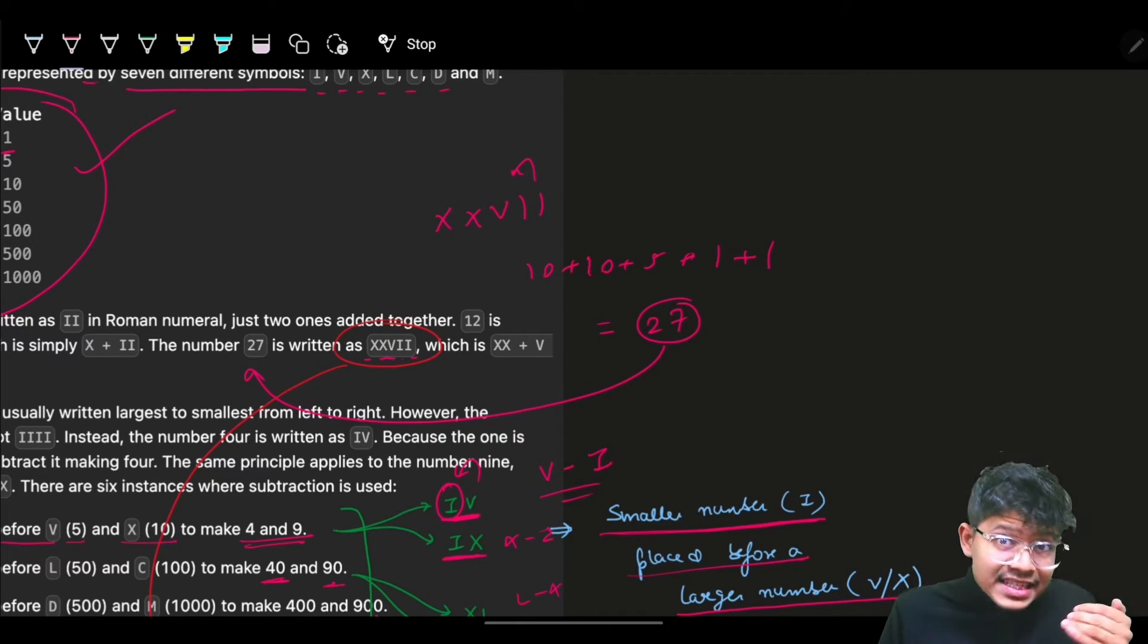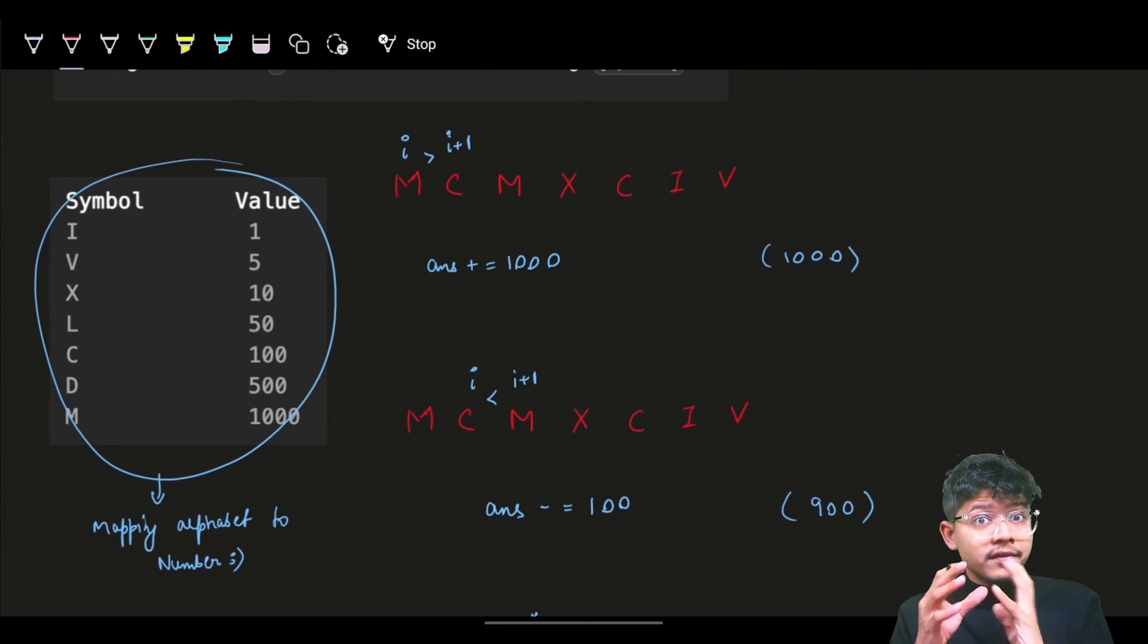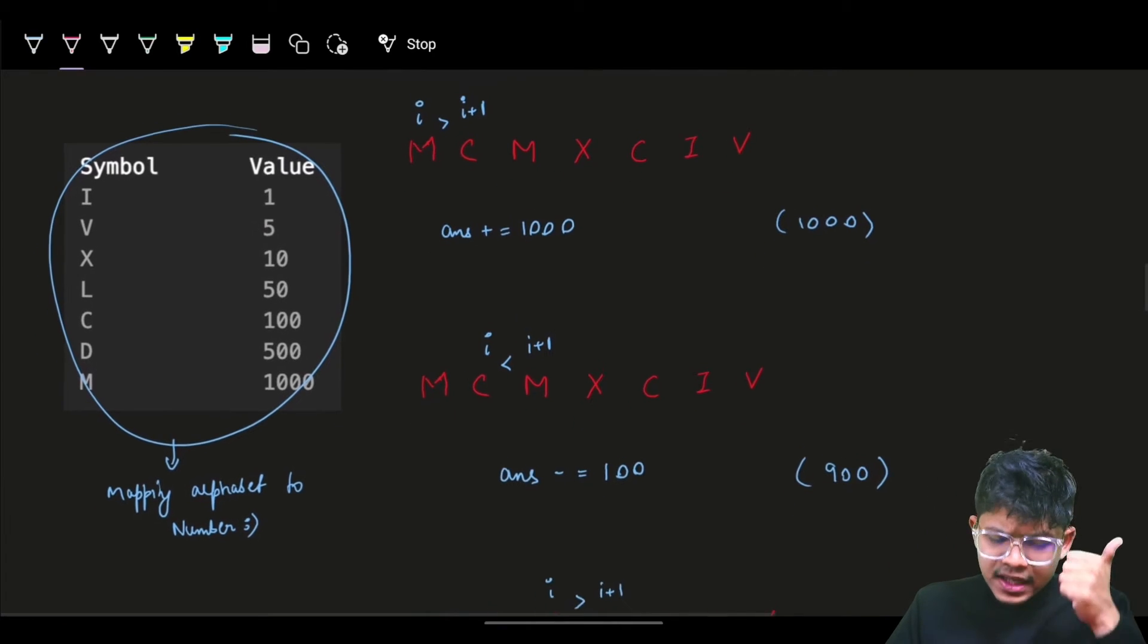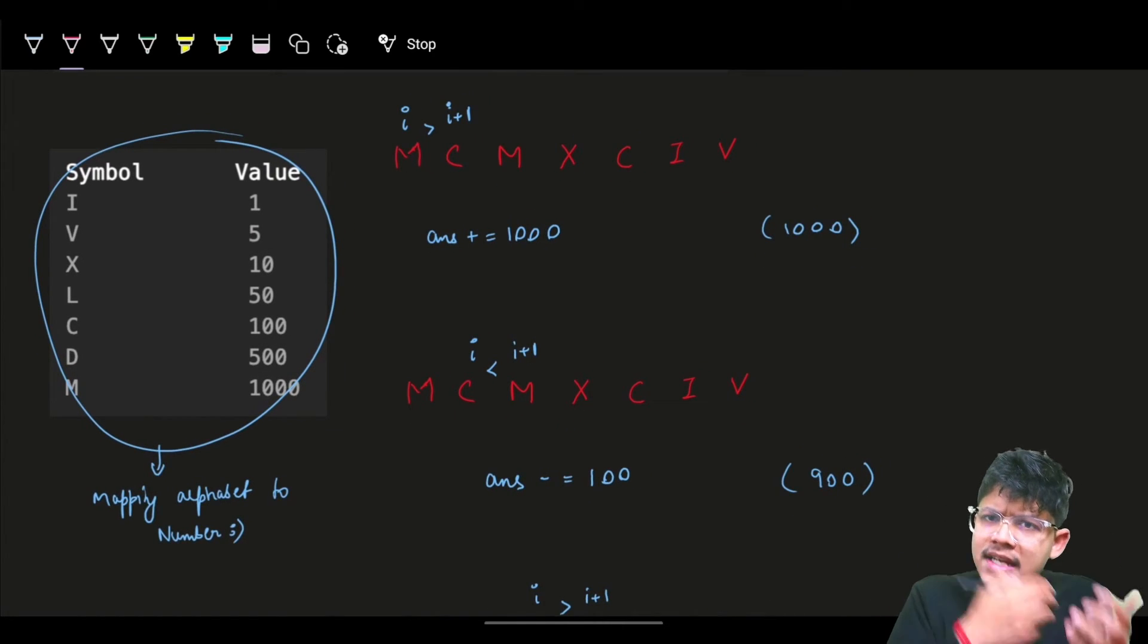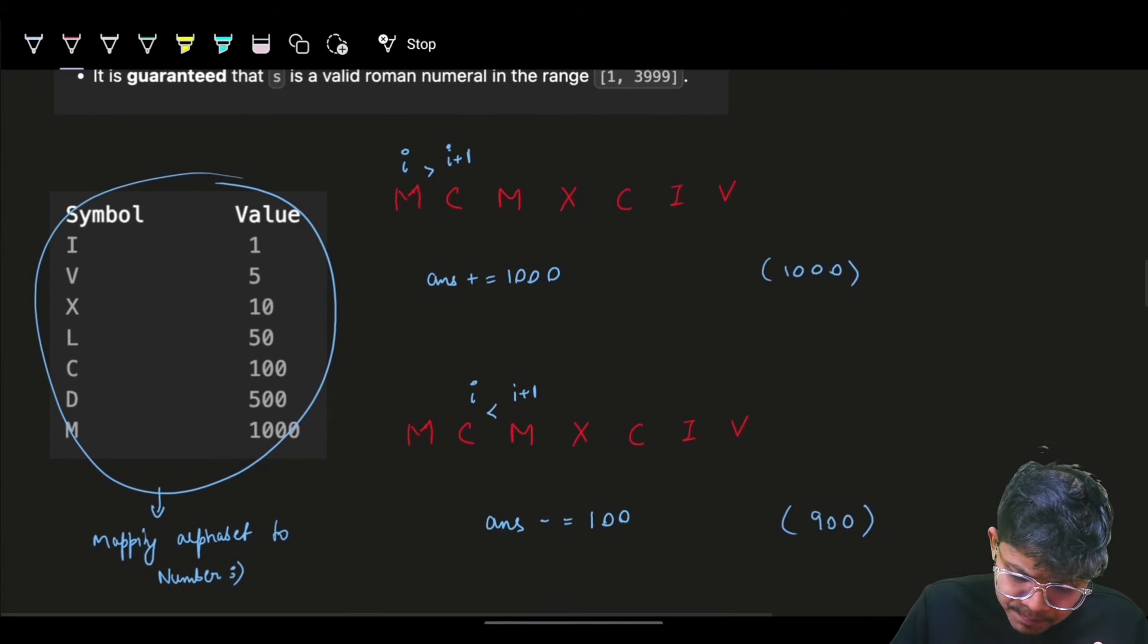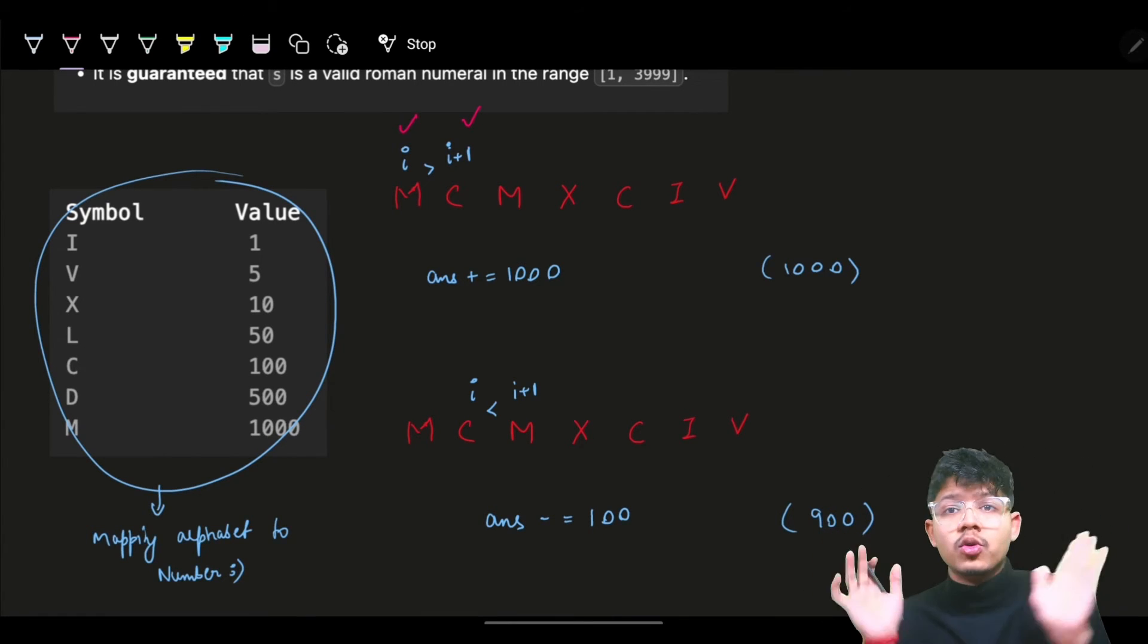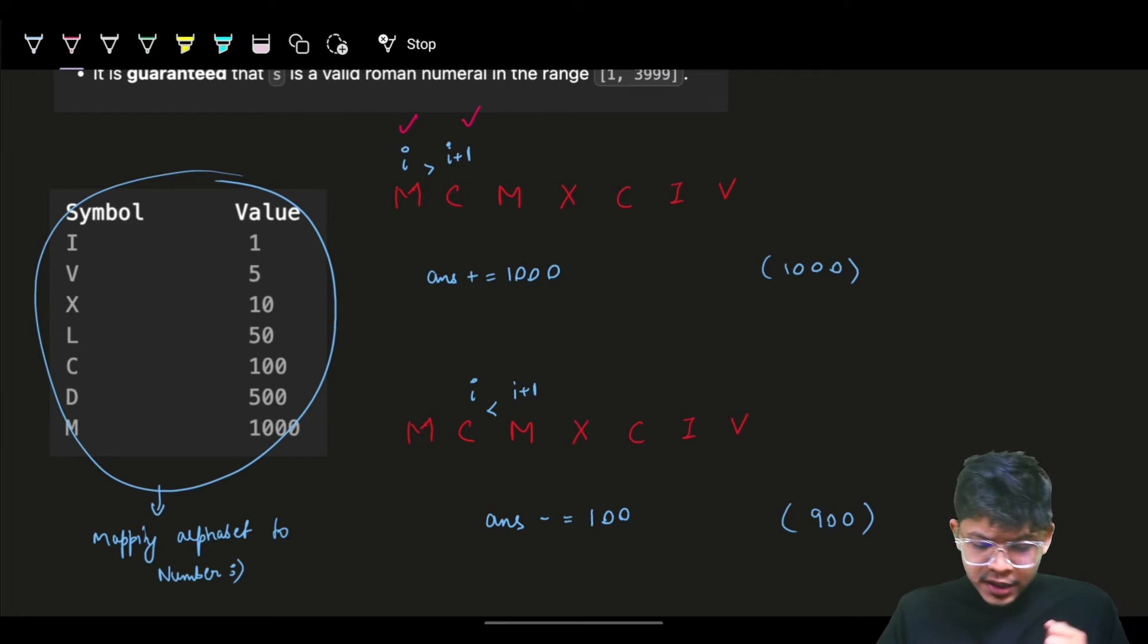We've got to visualize that if I have previously a lesser number, I'll subtract that. If I have a greater number, then I'll add that. So at index i, I'll check for i+1 - if there's something ahead of me that is more, I have to subtract myself.